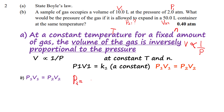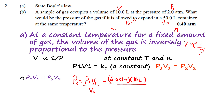Rearranging: P₂ = P₁V₁ / V₂. Substituting: P₂ = (2.0 atm × 10 L) / 50 L. The answer is 0.4 atm.